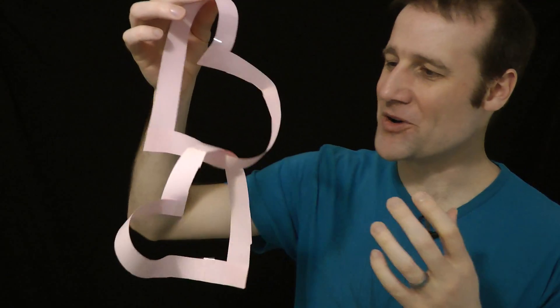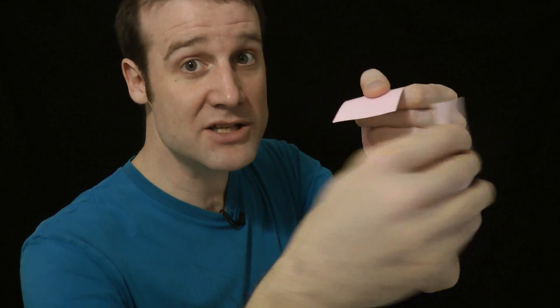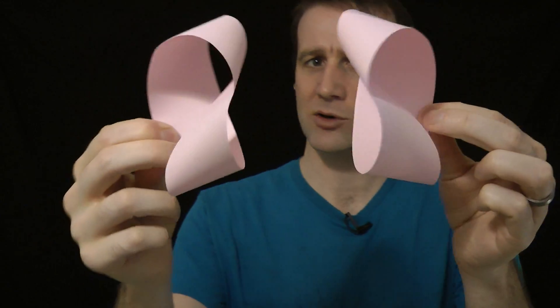Before you try the interlinked maths hearts, there's one thing you need to bear in mind, one slight knack. When you make your Mobius loop, you're actually faced with a choice, because you could turn the paper over and twist it to the right, or you could twist it to the left, and you get different Mobius loops depending on which way you twist it. A right-handed Mobius loop is a mirror image of a left-handed Mobius loop.